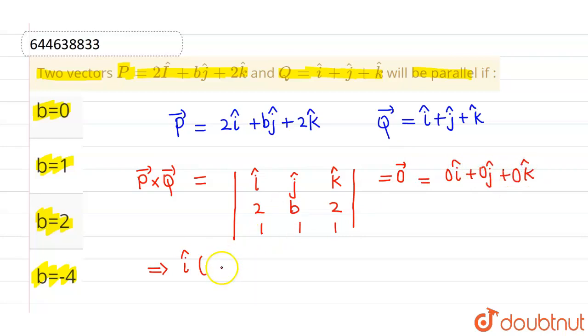Now if I expand this determinant, this comes out to be i cap times b minus 2, minus j cap times 2 minus 2 which is automatically 0, plus k cap times 2 minus b, and that must equal the null vector which is 0i cap plus 0j cap plus 0k cap.